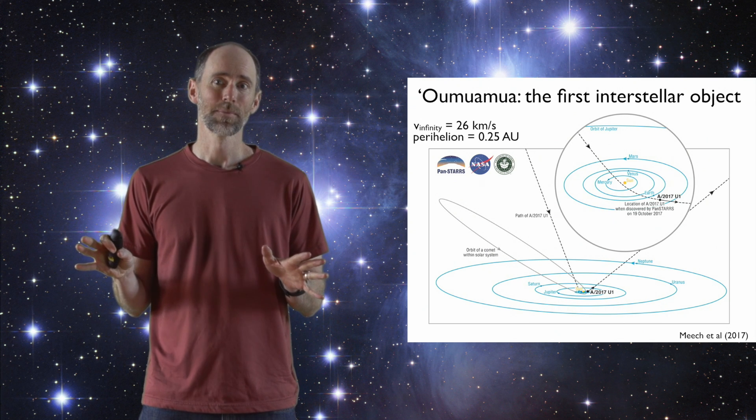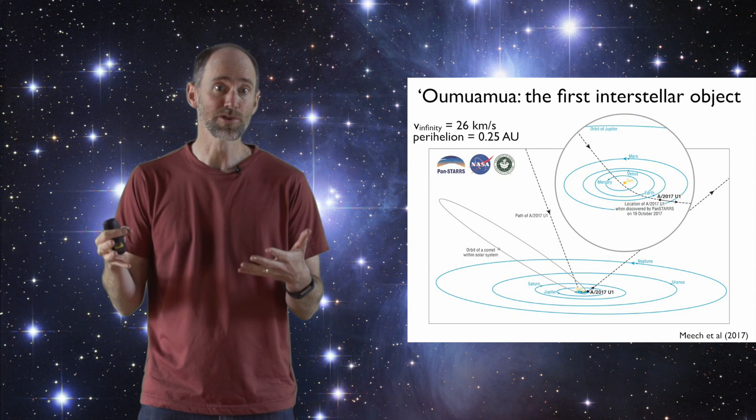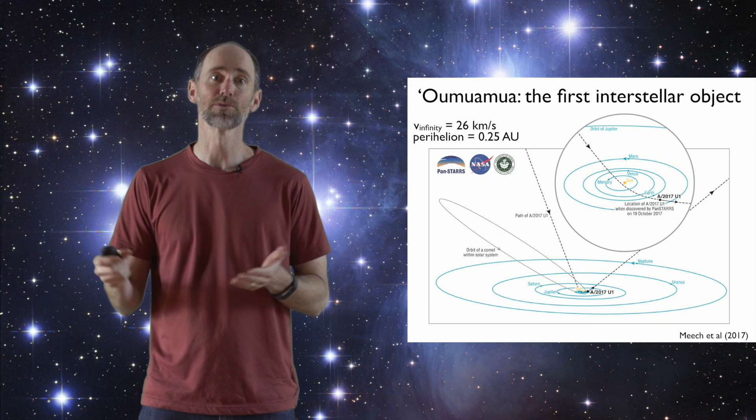And it's moving so fast that we can't explain its speed as part of the solar system. So it really definitely came from exterior to the solar system.